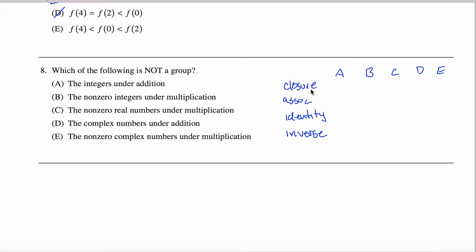Closure: the basic idea behind closure of a set under an operation is if you take two elements in that set and combine them under your operation, you're guaranteed to get a third element in that set. So if you take two integers and add them together, are you guaranteed to get an integer? Yes — you add a whole number and another whole number, whether positive or negative, you're guaranteed to get a whole number. We do get closure here.